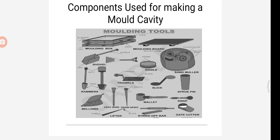Next we can see the rammer. It is a tool for packing and ramming the molding sand in the molding box. It is normally made of wood or cast iron. The rammer has two ends: one end is wedge-shaped and is known as the pin end, and the other end is cylindrical in shape and is known as the butt end. The pin end may have different shapes.